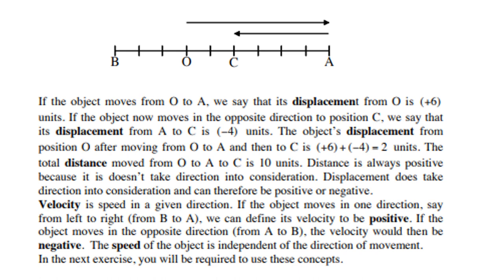Velocity is speed in a given direction. If the object moves in one direction, say from left to right, from B to A, we can define its velocity to be positive. If the object moves in the opposite direction, from A to B, the velocity would then be negative. The speed of the object is independent of the direction of movement. In the next exercise, you will be required to use these concepts.